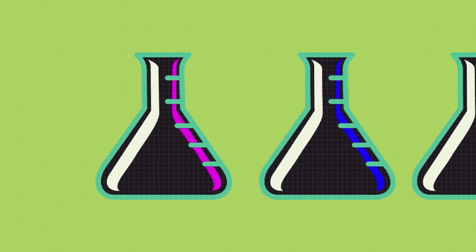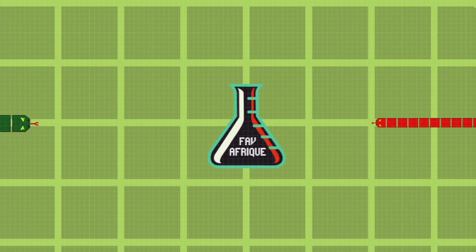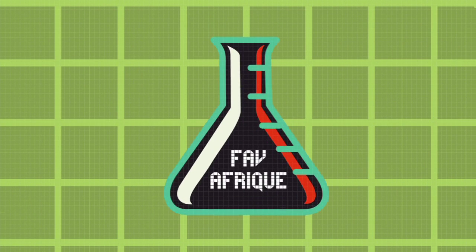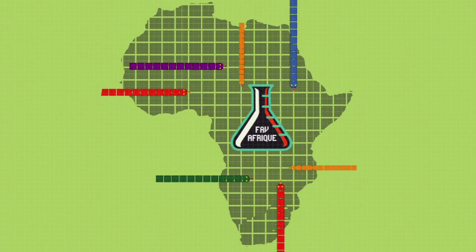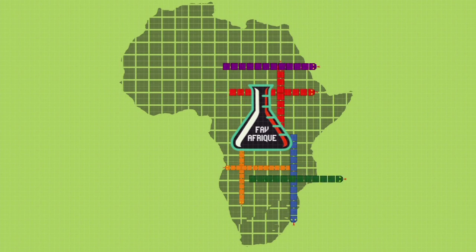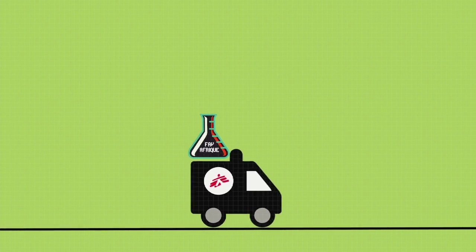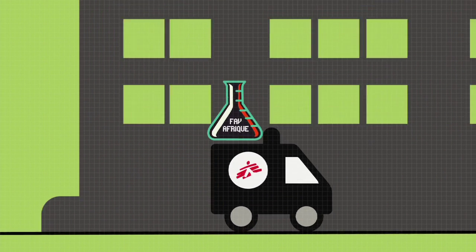Few anti-venoms adapted for use in developing countries can stop the effects of multiple types of venom simultaneously. Vavafric, however, is effective against the venom of at least 10 of the most dangerous snakes found in sub-Saharan Africa. It is used extensively by MSF teams in the field.